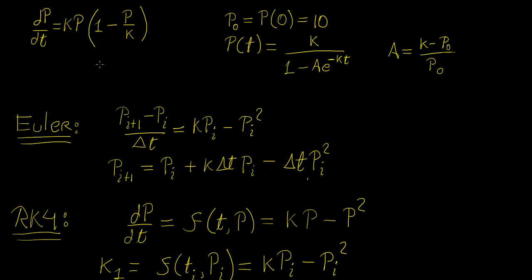What I want to do now is to compare the two methods and see how their accuracies compare in terms of the step size. I have chosen an initial size for the population of 10, and this is the analytical solution where A is just related to the initial population like this.